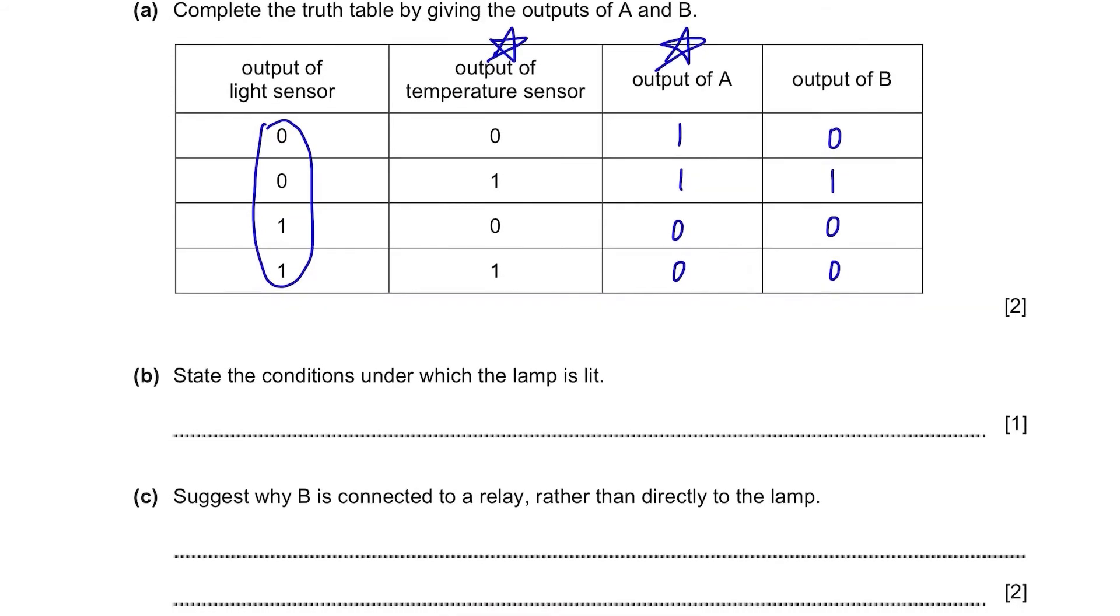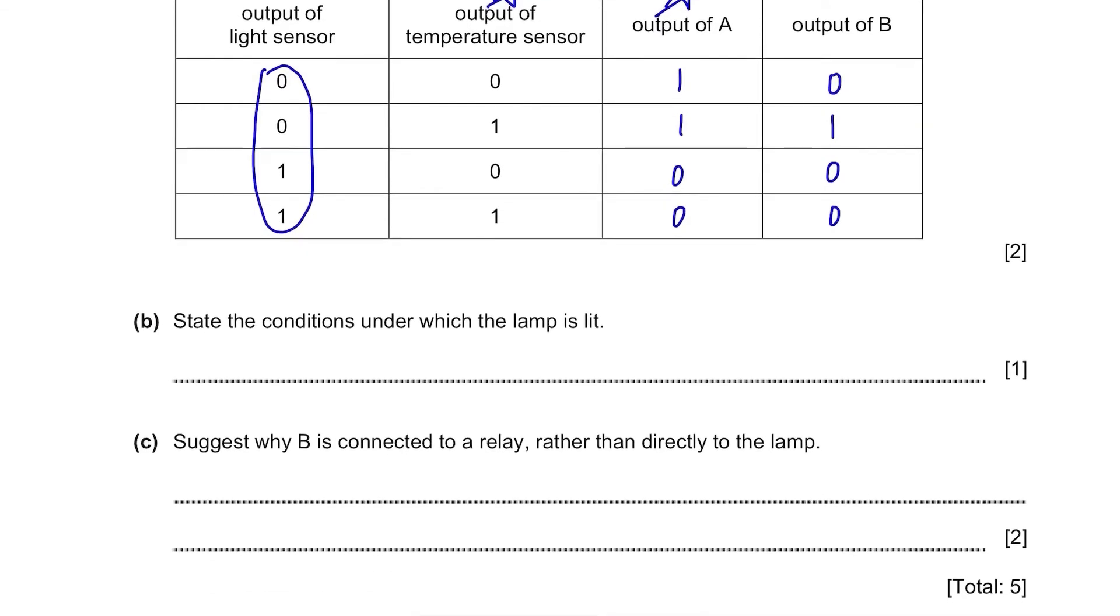Part B. Suggest the conditions under which the lamp is lit. The question said the lamp is lit when the input to the relay is logic 1, meaning when the output of B is 1. So it's at the second row. We can see that the output of light sensor is 0 here, which means there is no raised light levels and it is dark. For the output of temperature sensor, it is logic 1, which means it detected raised temperatures and it became hot. So it's when it's dark and hot.